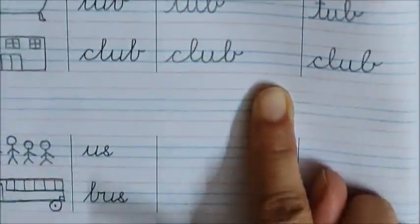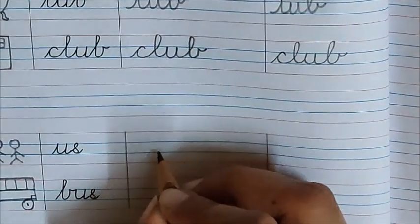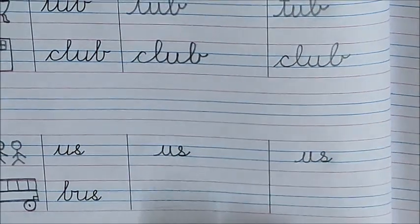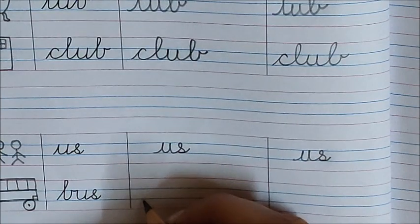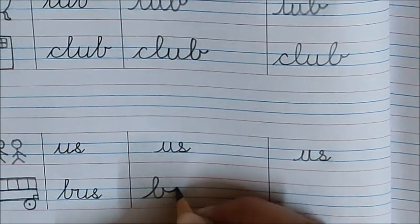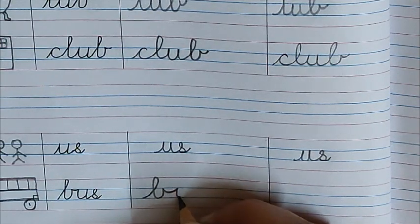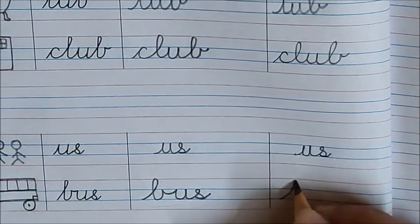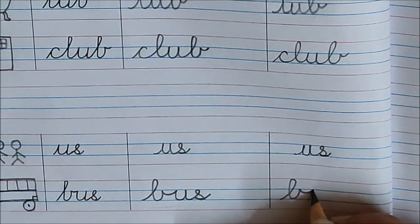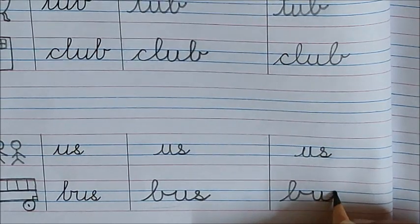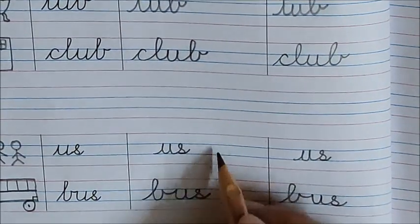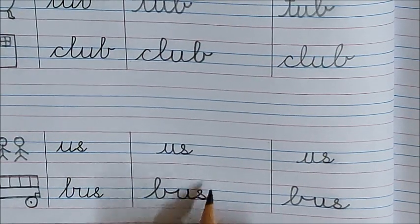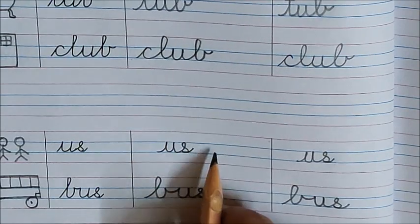Now children, let us write the next word. U, S, us. U, S, us. U, S, us. Next word is bus. B, take this smiley out. Now take it down, go up, come back on the same line. U, S, bus. Let us write it one more time. B, take the smiley out. Now write down U. Now again go up and write down S. B, U, S, bus. Us, bus. They also belong to same word family. Which word family do they belong to, children? US. Us, us. They both are rhyming words. Us, bus.